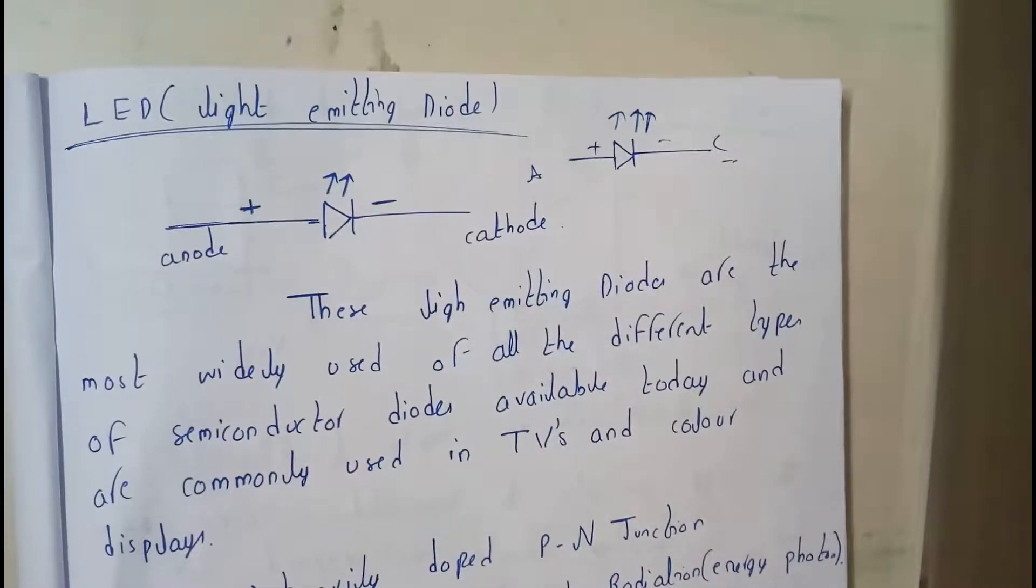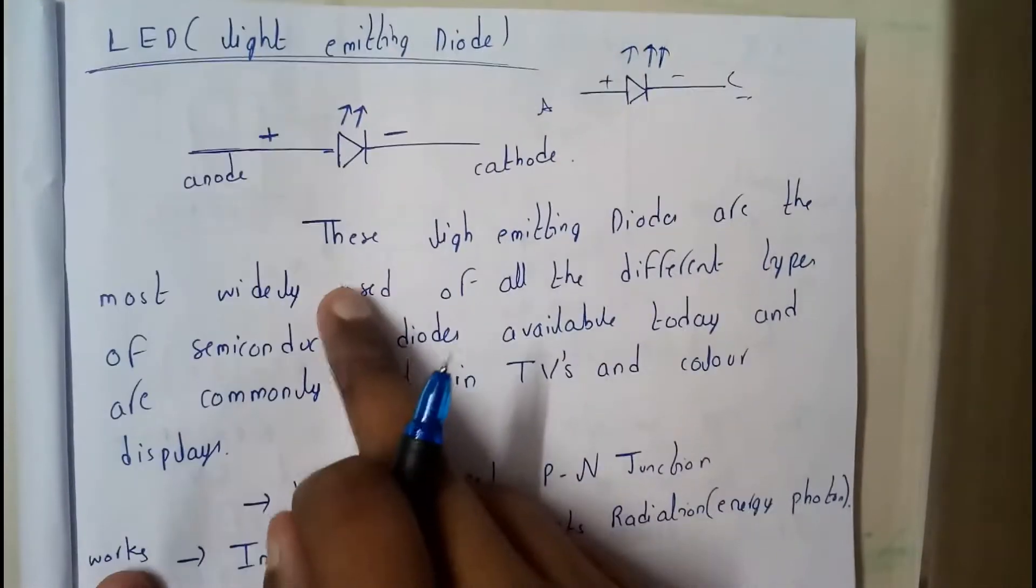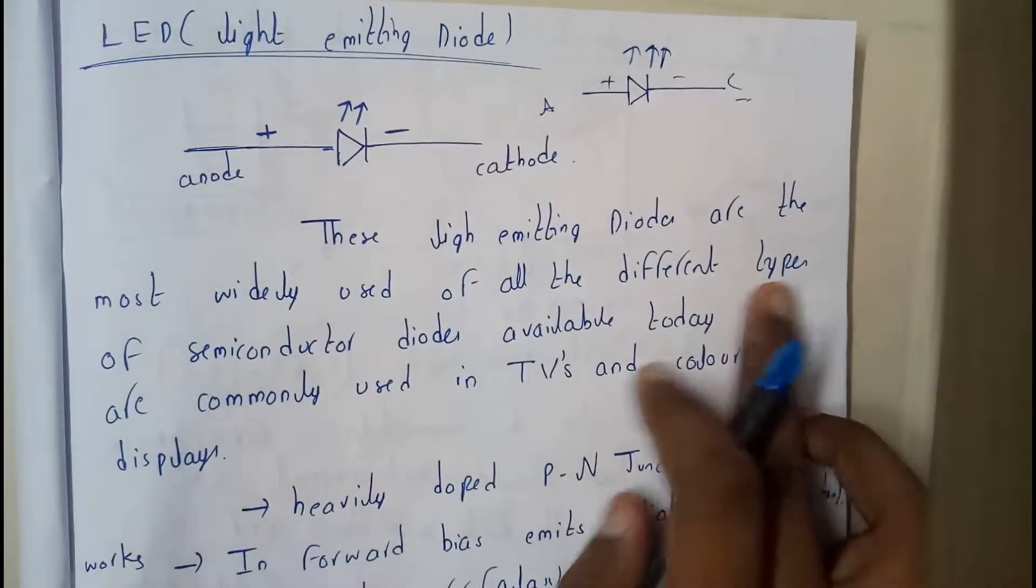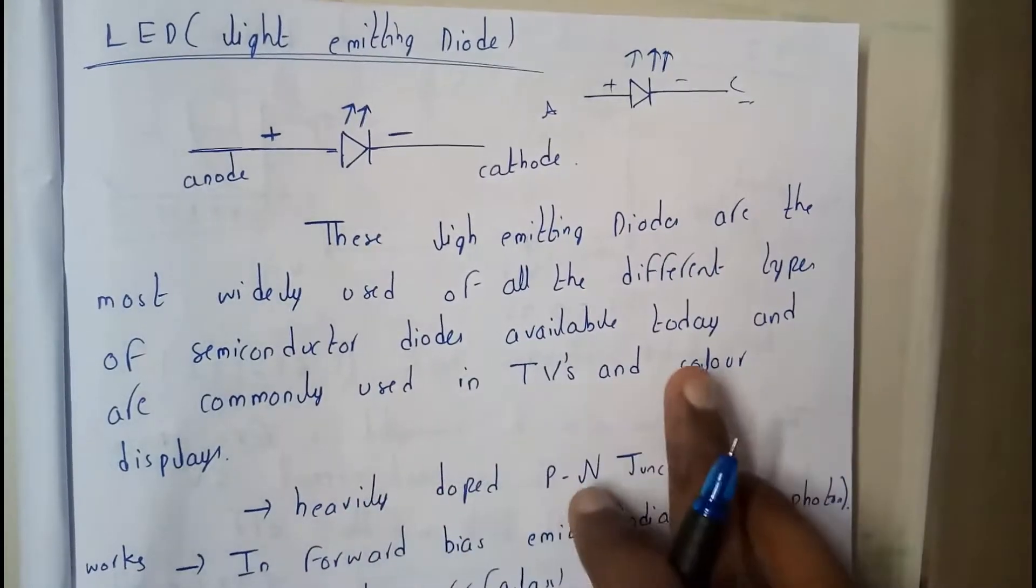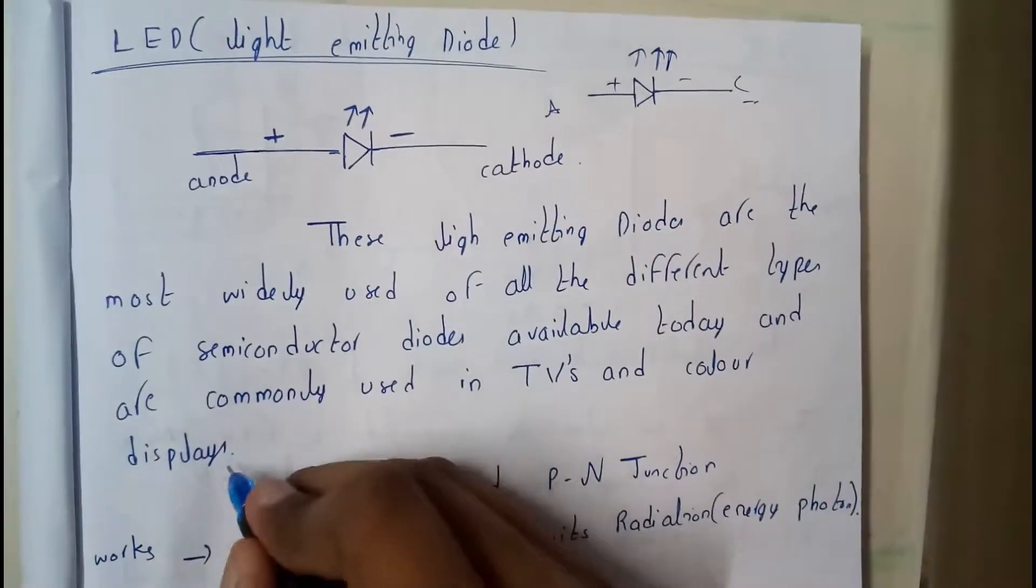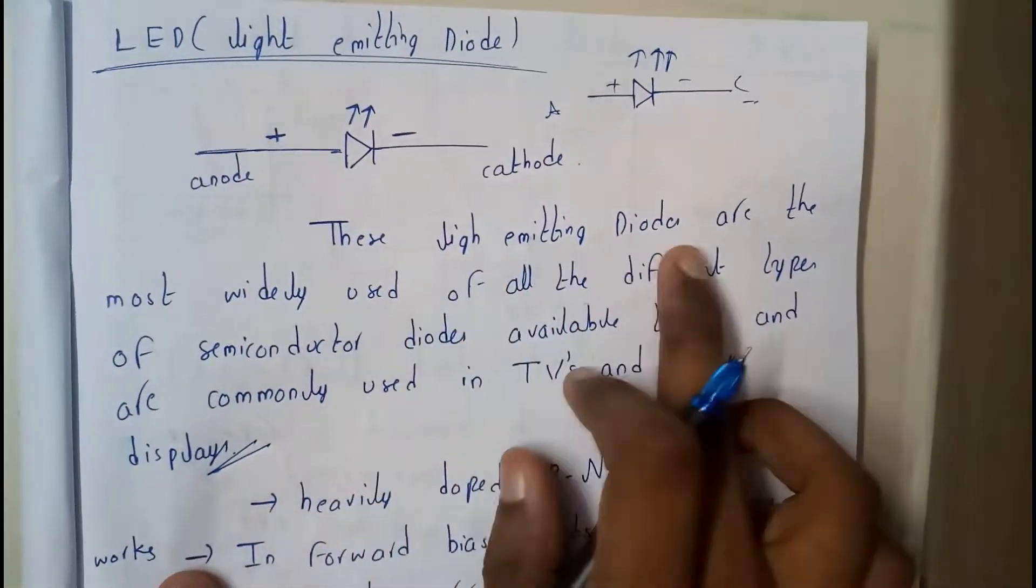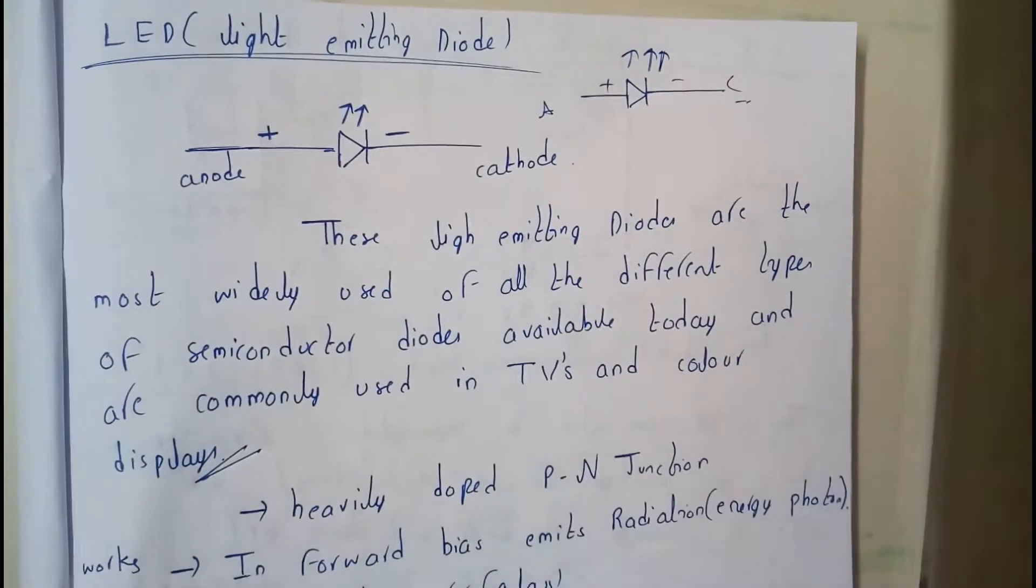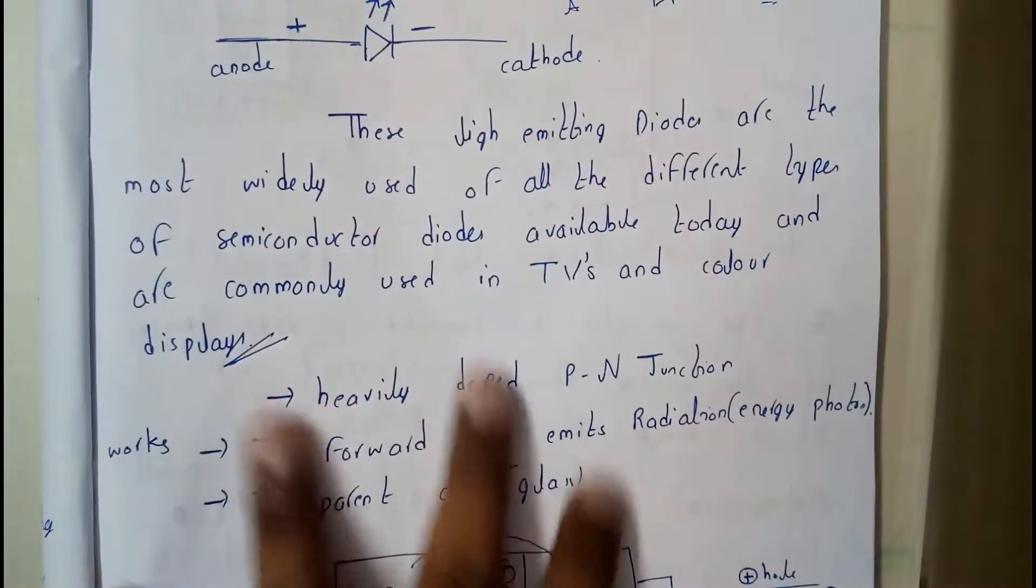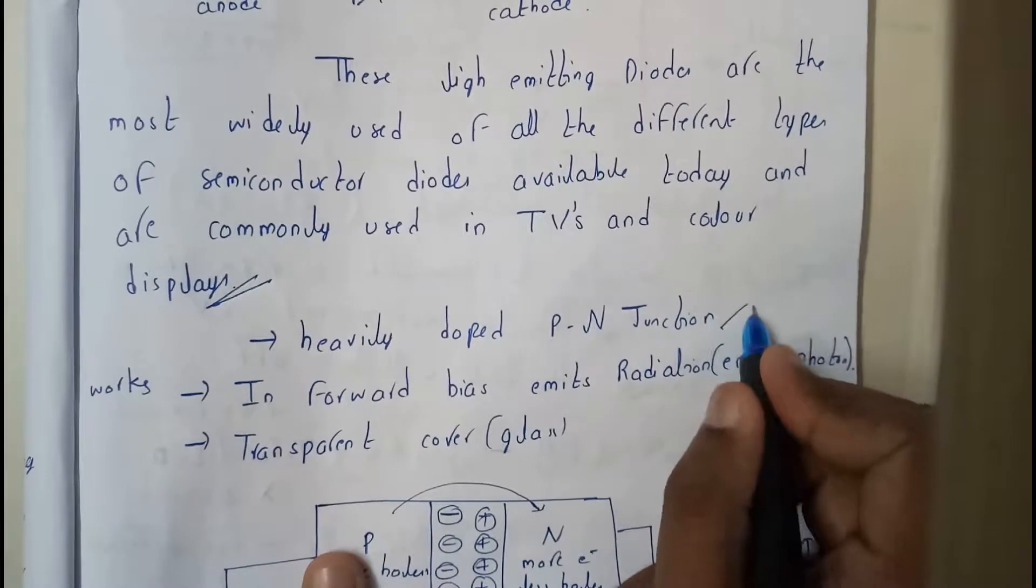Basically these light emitting diodes are the most widely used of all the different types of semiconductor diodes available today and are commonly used in televisions and color displays. It is basically a heavily doped PN diode.